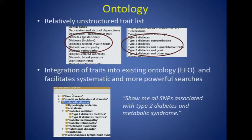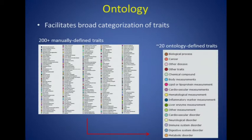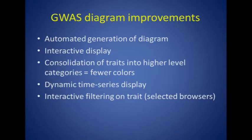The ontology will also allow for combinatorial searches. Being able to more broadly categorize traits means we can go from about 200 manually defined traits — what you find on our current diagram — to on the order of 20 ontology-defined traits, which makes it easier to peruse the diagram visually as well as classify these traits. The new ontology can also be used to improve the generation of the GWAS catalog diagram.